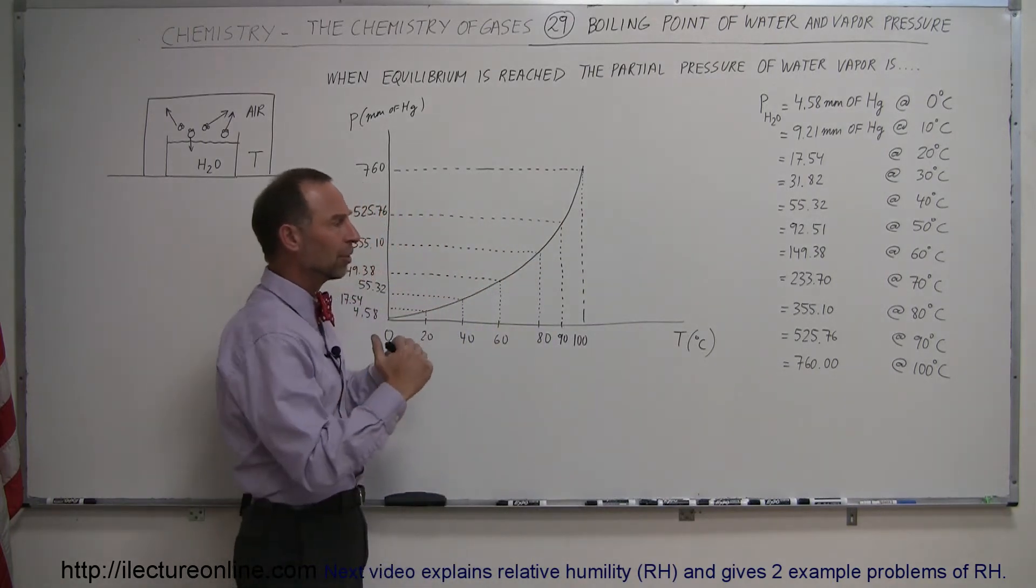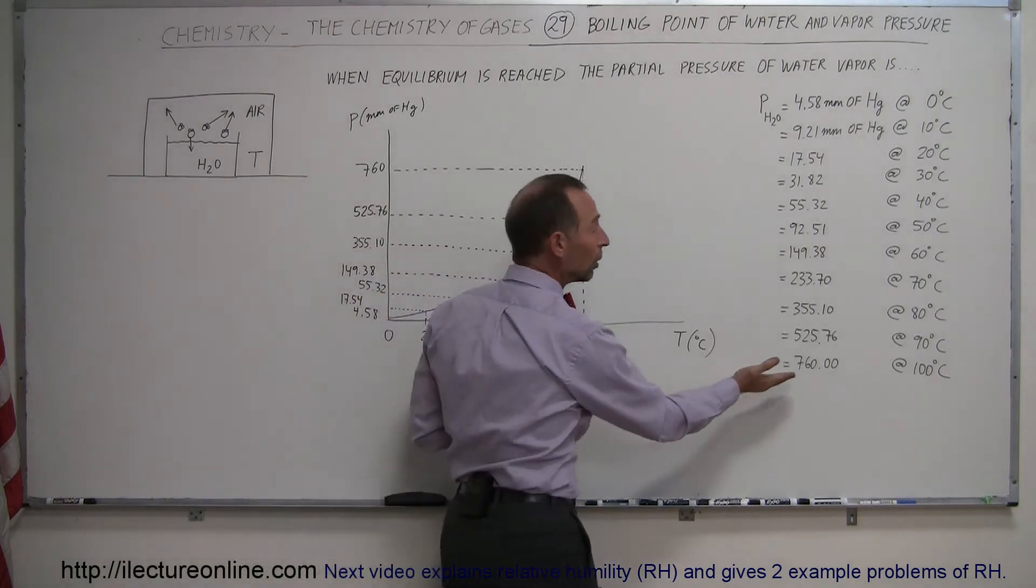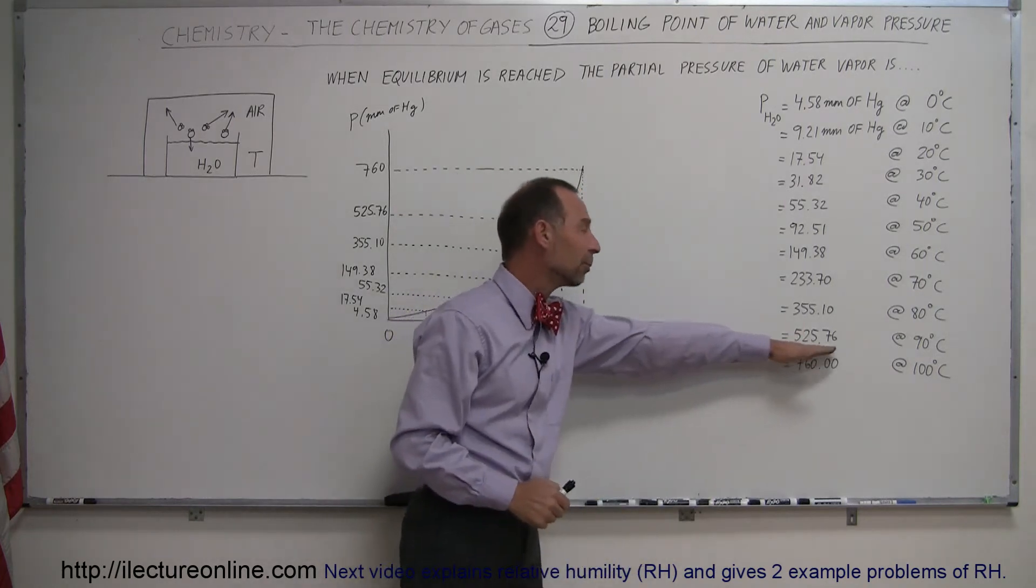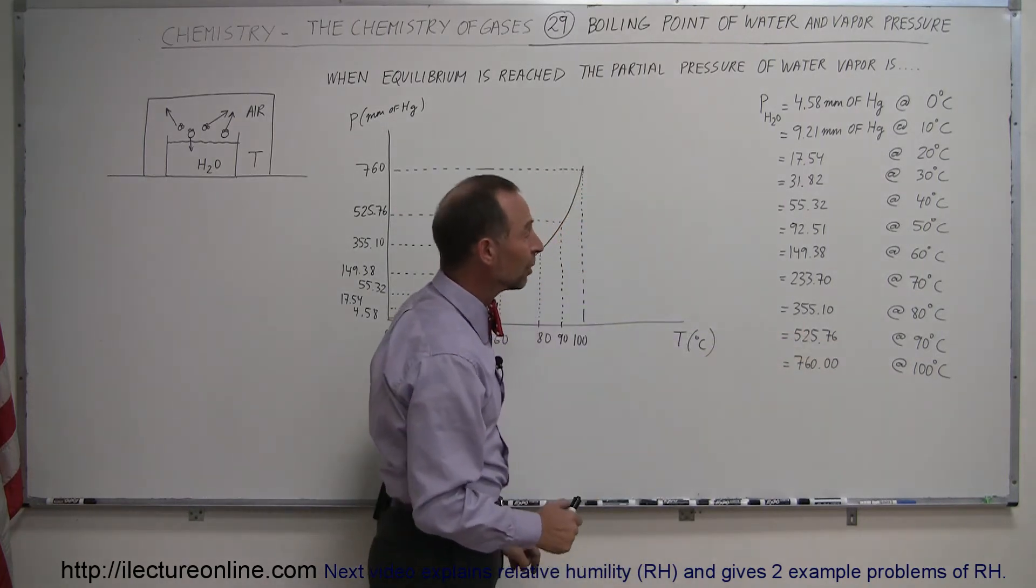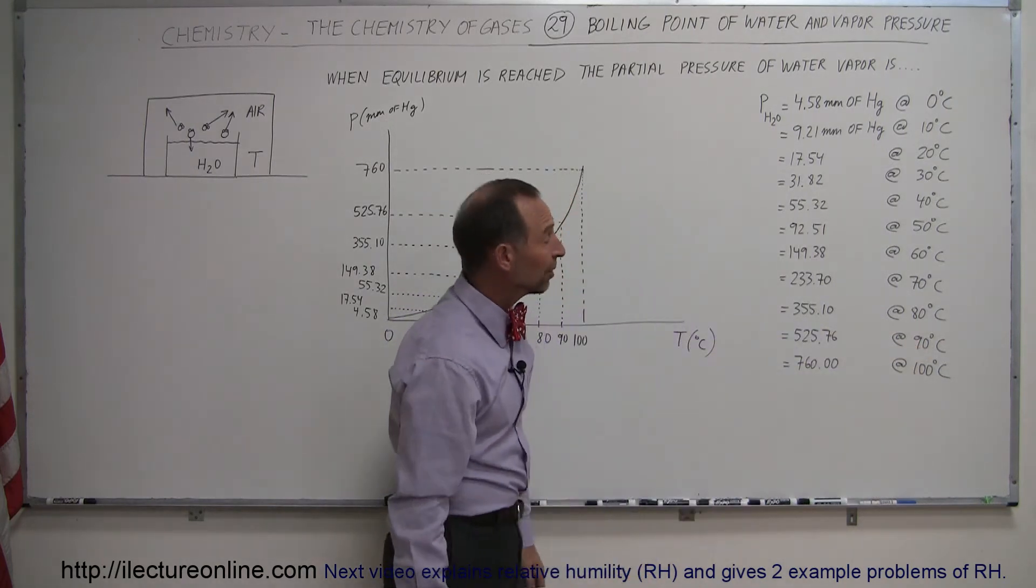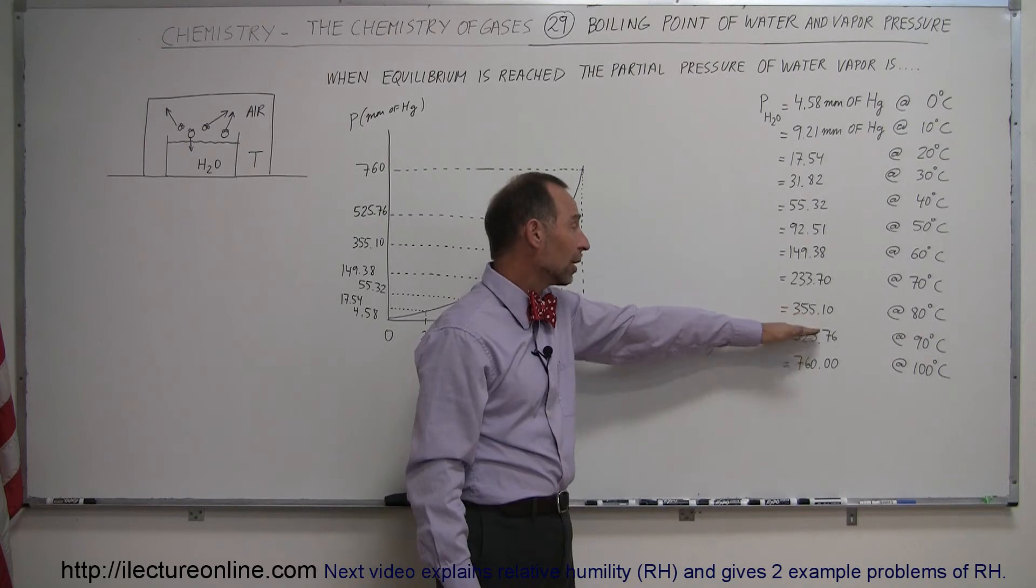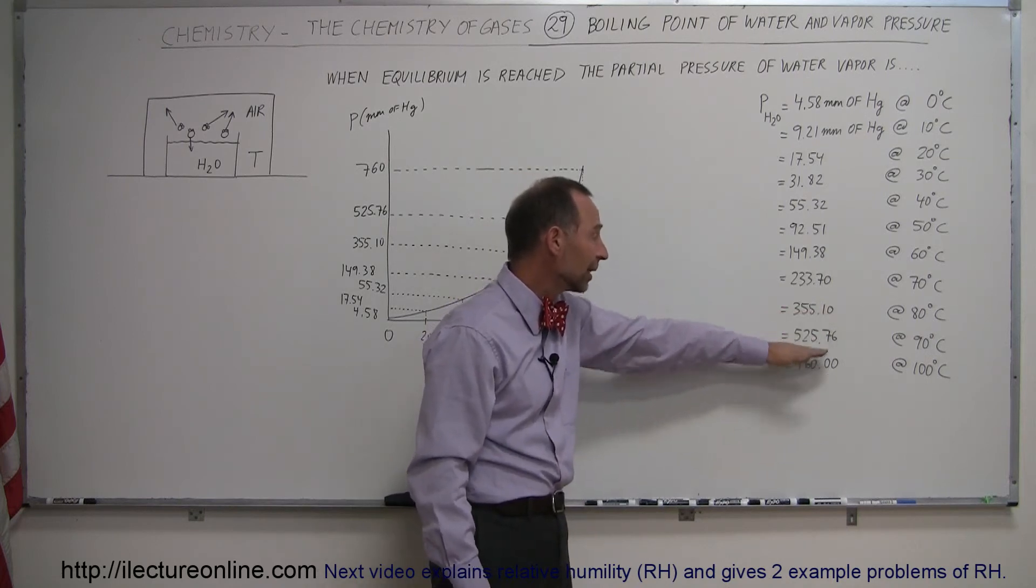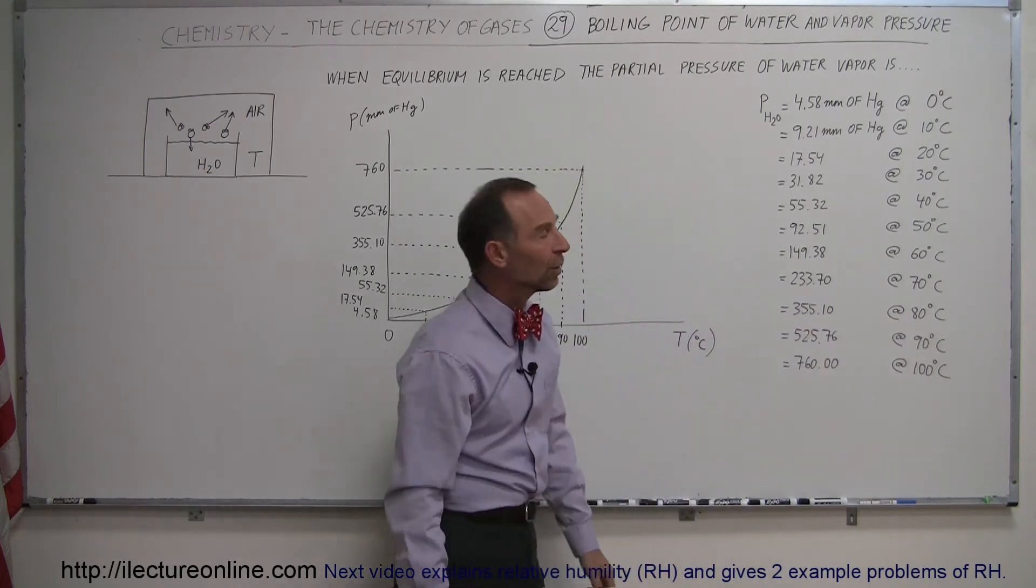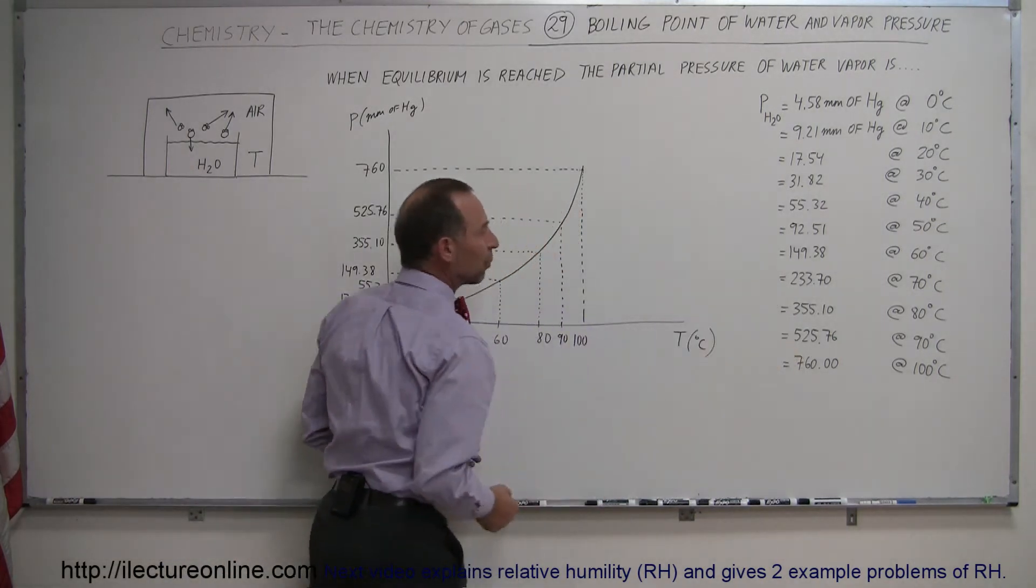Now, what happens when the air pressure lessens? Let's say we go up into the mountains where the pressure is less. Water can boil at lower temperatures. Let's say we go high enough into the mountains where the air pressure now is 525.76 millimeters of mercury. That means that the water will now boil at 90 degrees centigrade. What if we go so high up in the mountains when the pressure of the air is maybe a little bit less than half of what it is at sea level, water will now boil at 80 degrees centigrade. So that means that water will fully come to a boil at those particular pressures.